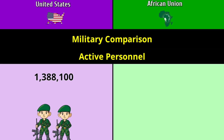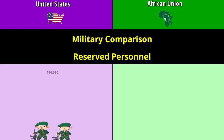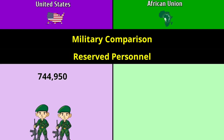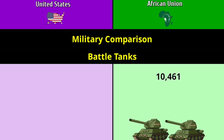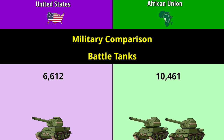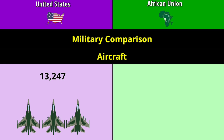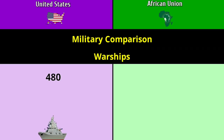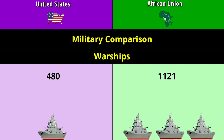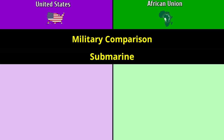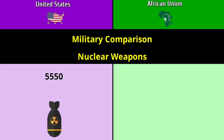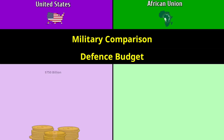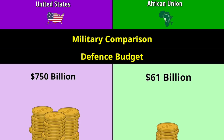Military comparison — active personnel: 1.38 million versus 2.9 million. Reserve personnel: 744,950 versus 993,000. Battle tanks: 10,461 versus 6,612. Aircraft: 13,247 versus 3,610. Warships: 480 versus 1,121. Aircraft carriers: 11 versus 0. Submarines: 20 versus 68. Nuclear weapons: 5,550 versus 0. Defense budget: 750 billion dollars versus 61 billion dollars.